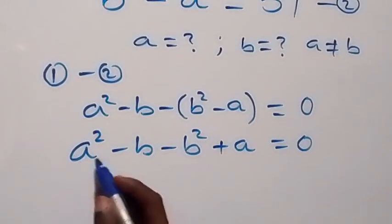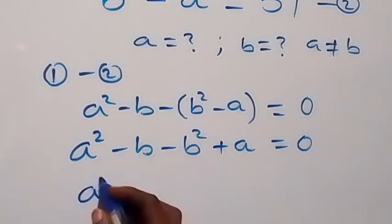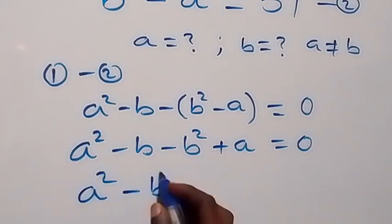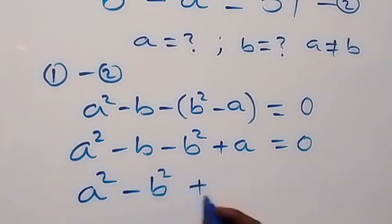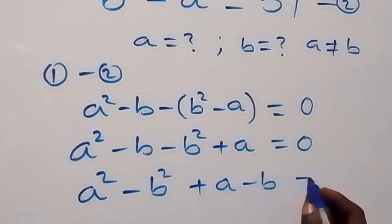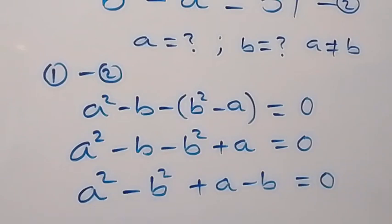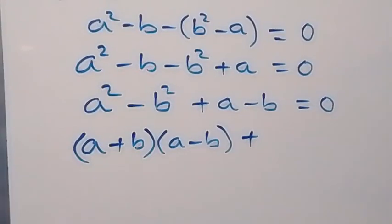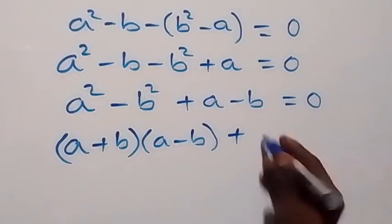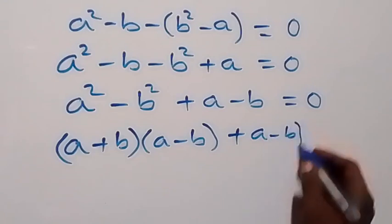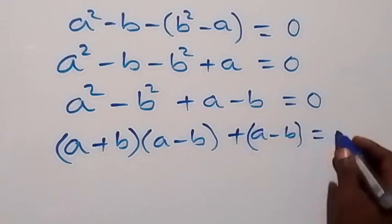Then let's bring the squared terms together. This gives us a squared minus b squared, then we have plus a minus b, equals 0. We can write the difference of squares as a plus b into bracket a minus b, plus bracket a minus b, equals 0.